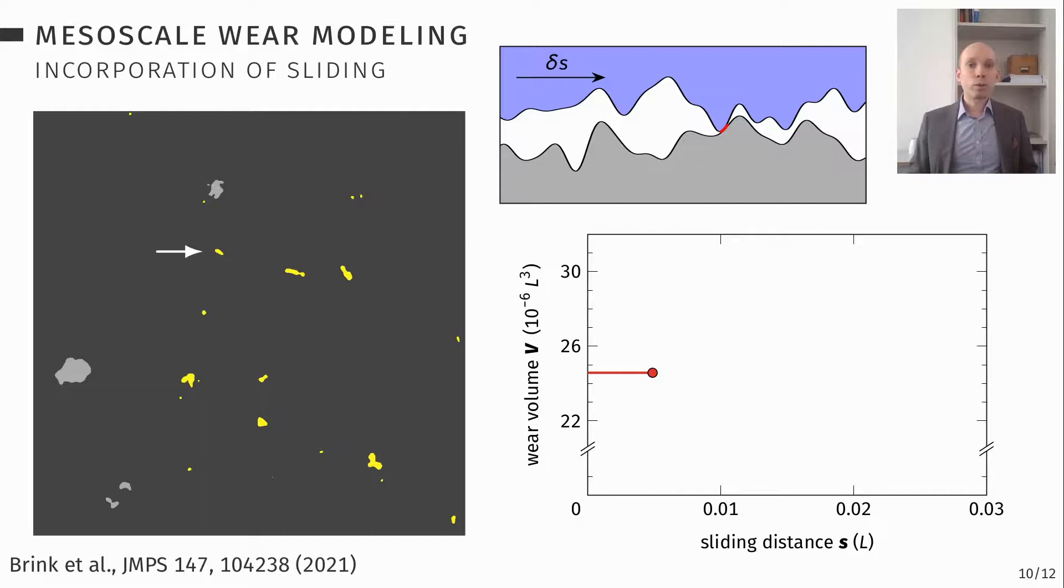But what happens, of course, is that new contacts form during the sliding process. And here's another one. So you have two contacts here marked by arrows that have just recently formed. And they grow. And they grow and keep growing until they reach the critical size. And when they reach the critical size, we say now they form a particle. And now we count that in the wear volume. And again, that happens there, forms a particle, is counted, and then not counted again.